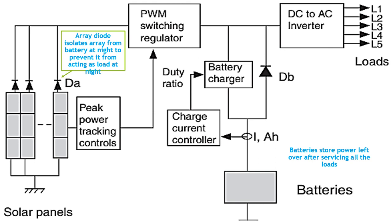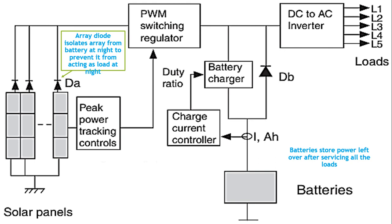This is the battery charger and this is the charge current controller. Batteries are used to store the power left over after servicing all the loads. The charge controller keeps track of the battery state of charge (SOC) by controlling system signals such as the array and battery charging currents and voltages, and activates the dump load if the battery is fully charged and residual power remains.